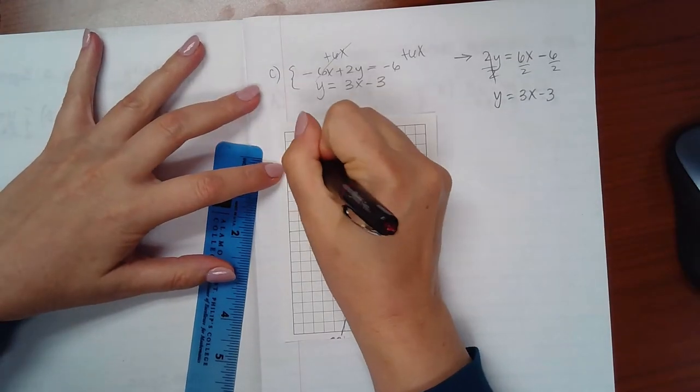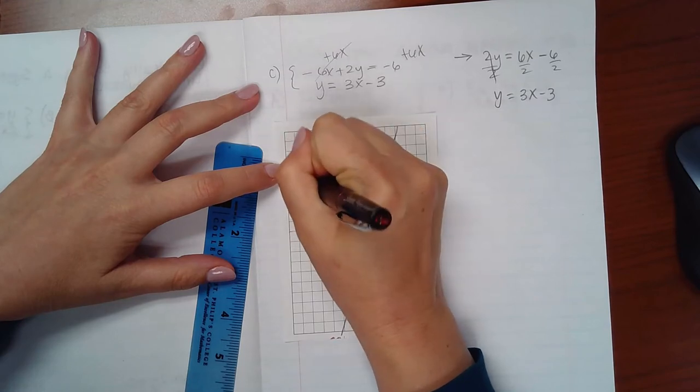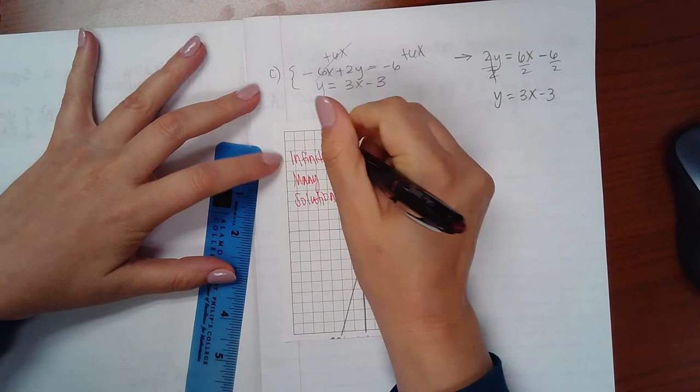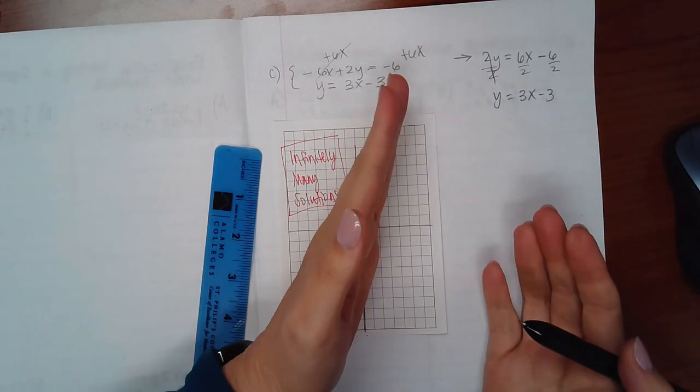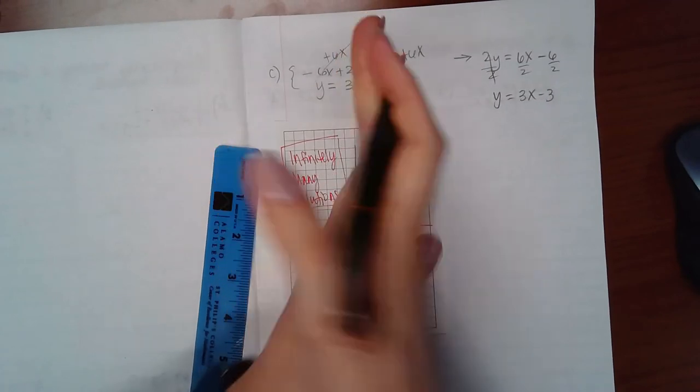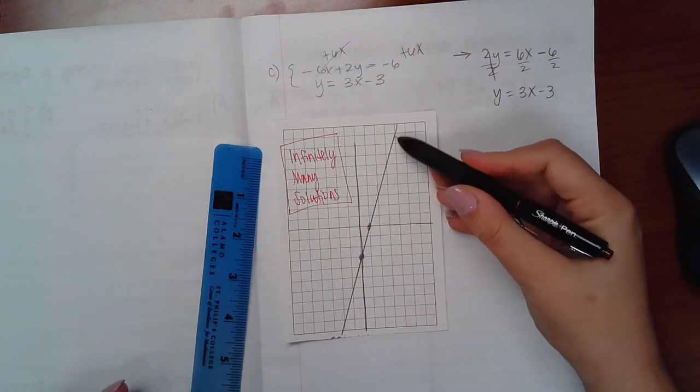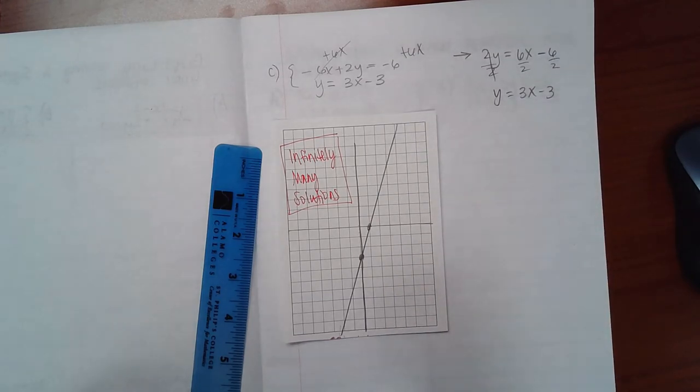This one, the answer is infinitely many solutions. Why is it infinitely many solutions? Because these two lines are the same. They're right on top of each other. So where do they intersect? They intersect everywhere on this line. And because this is going up forever and this is going down forever, there's an infinite number of spots where these two lines intersect. That's why there are infinitely many solutions.